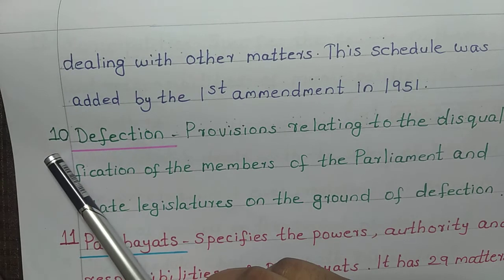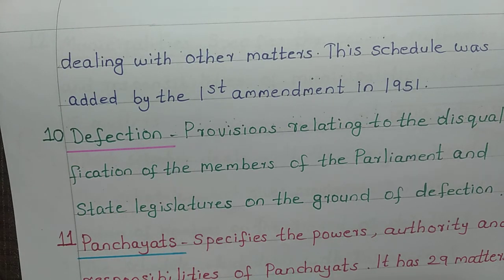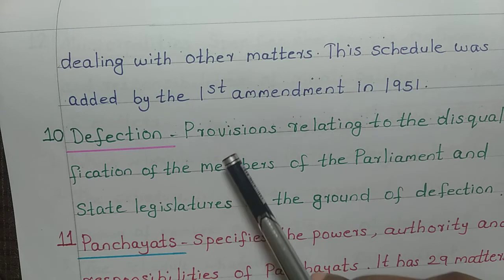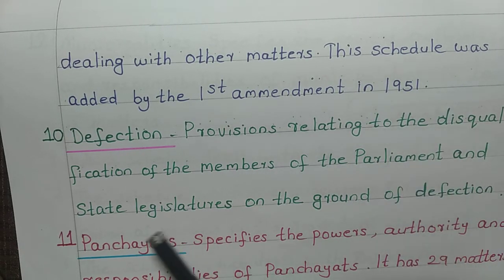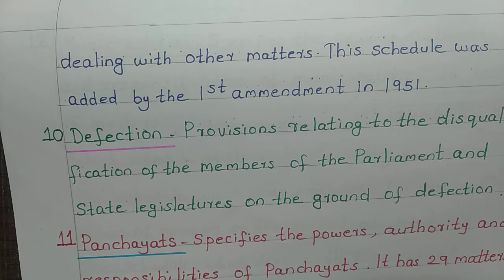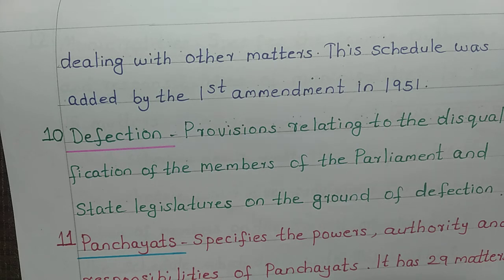Tenth schedule: keyword is defection. This schedule deals with provisions relating to the disqualification of the members of the parliament and state legislatures on the ground of defection. In case of defection, the parliament can disqualify its members. This comes under schedule 10.